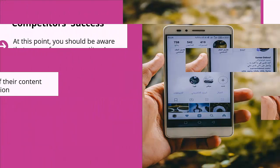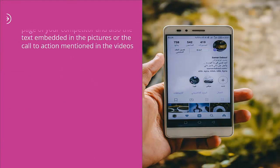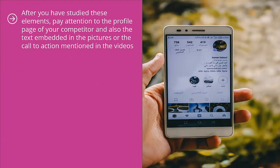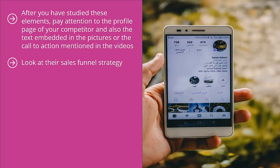Also pay attention to the description text for these items. Do you see any similarities? Can you connect the dots? Is there some bigger pattern emerging? After studying these elements, pay attention to the competitor's profile page and the text embedded in the pictures or the call to action mentioned in the videos. These relate to their sales funnel — they are mentioning discount codes so people can get a discount and also promoting the profile page of their website.